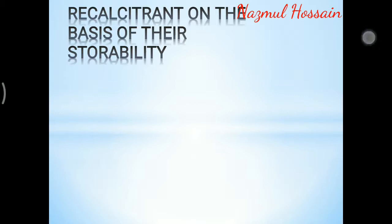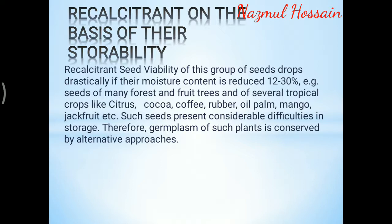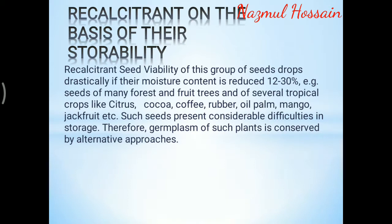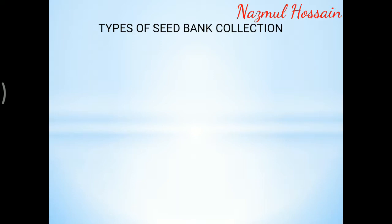Recalcitrant seeds: the viability of this group drops drastically if the moisture content is reduced below 12 to 30%. Such seeds include those of many forest and fruit trees and several tropical crops like citrus, cocoa, coffee, rubber, oil palm, mango, and jackfruit. Such seeds present considerable difficulties in storage; therefore, germplasm of such plants is conserved by alternative approaches.